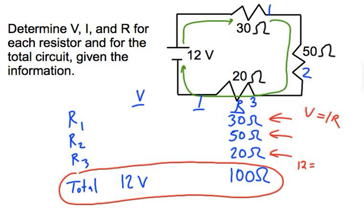So 12 equals I times 100. We don't know I, so we solve by dividing each side by 100. I ends up being 0.12 amps. So my current is 0.12 amps, which means when this current leaves the battery, it's 0.12 amps.